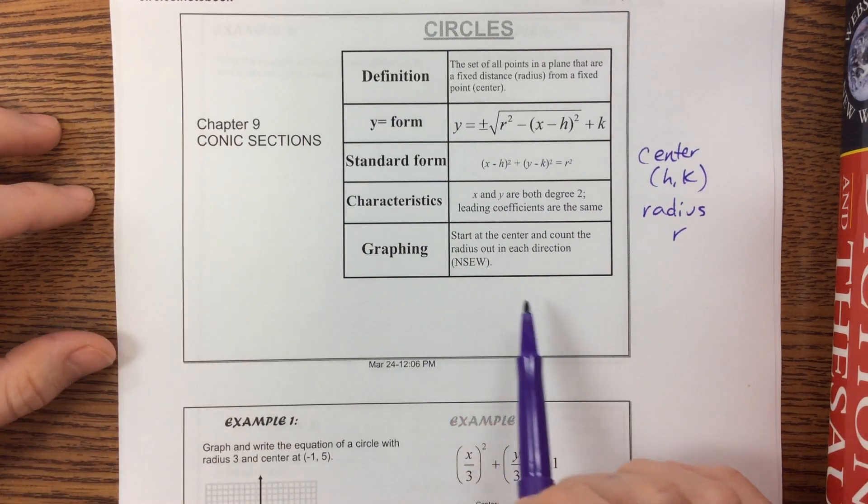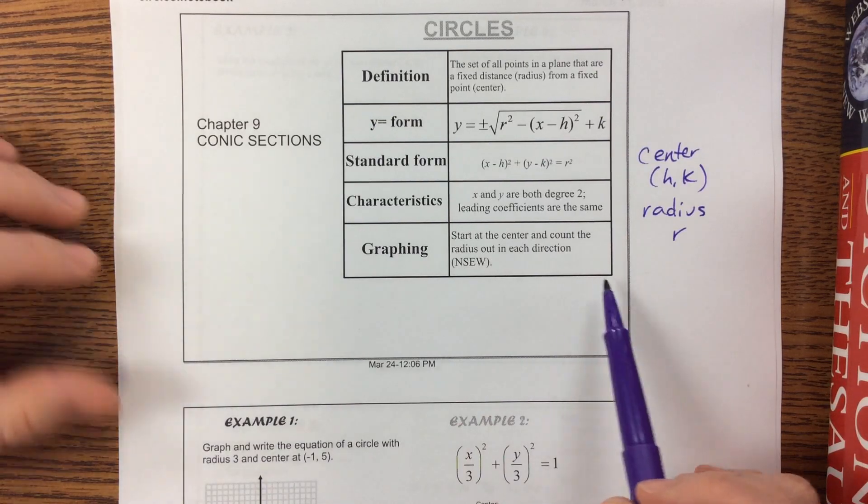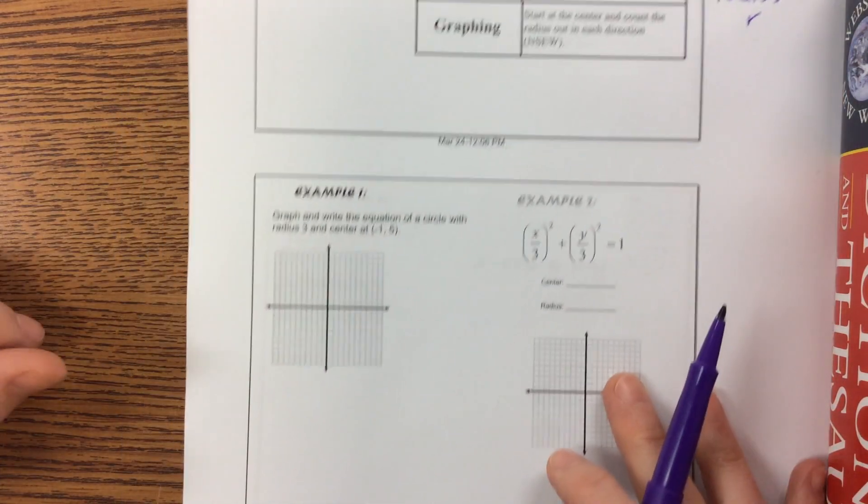When we graph, start at the center and count the radius north, south, east, west. Let's jump in and do it.